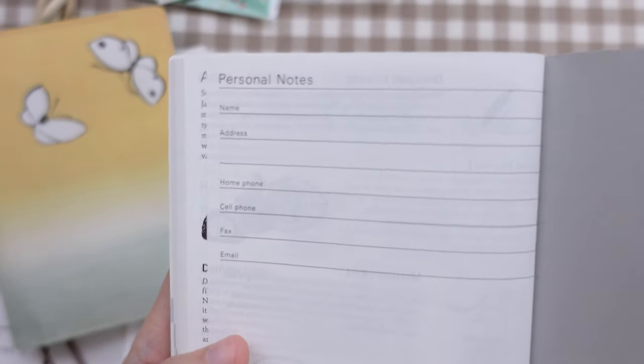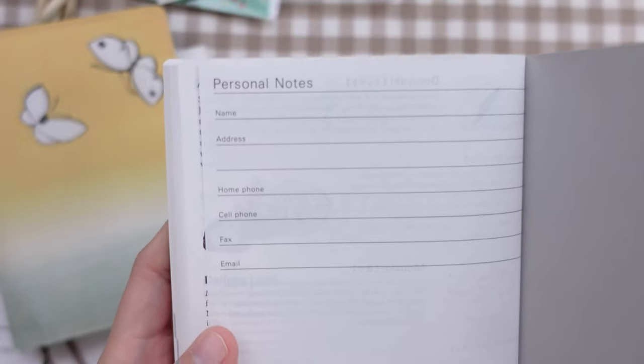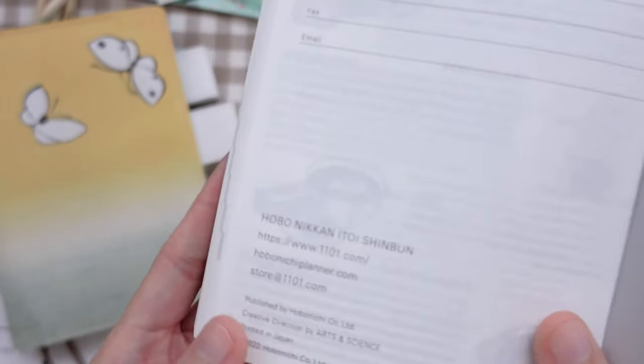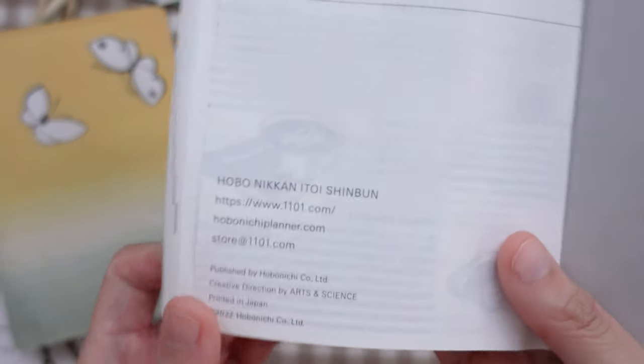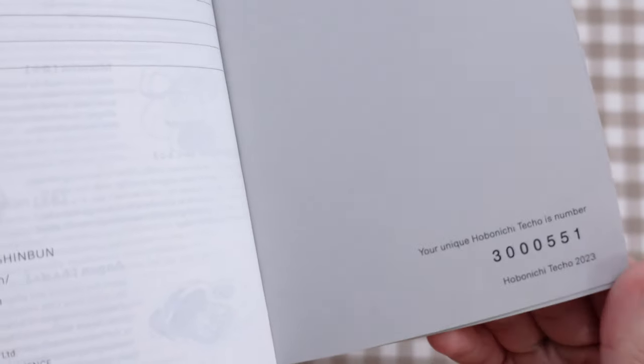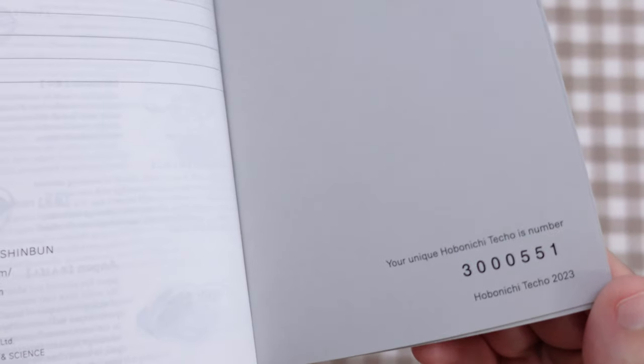So at the very back, we have a page for personal notes. I am going to be filling this out privately. And then at the bottom of this page, we have some contact information for the Hobonichi. And I like that every Hobonichi is unique, and there is a Hobonichi Techo serial number at the back.